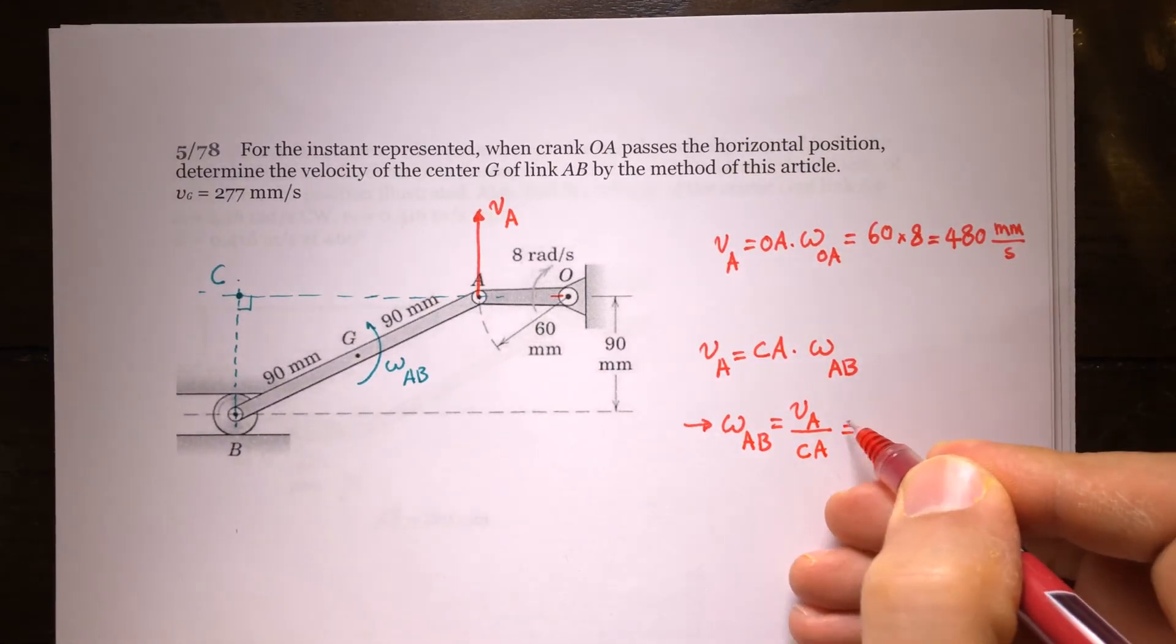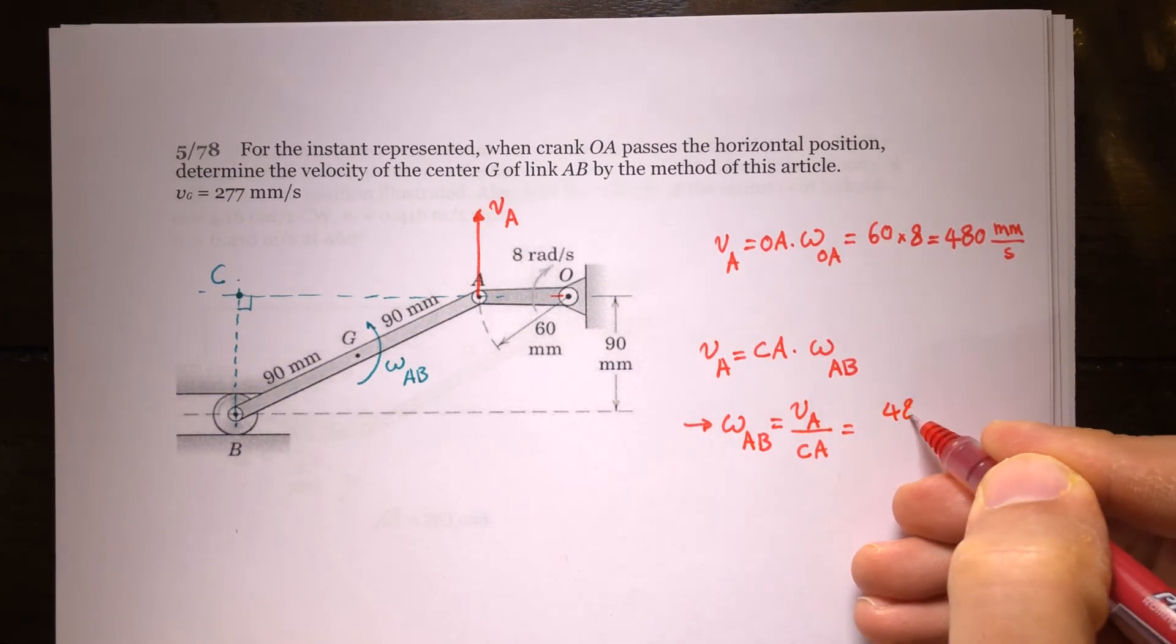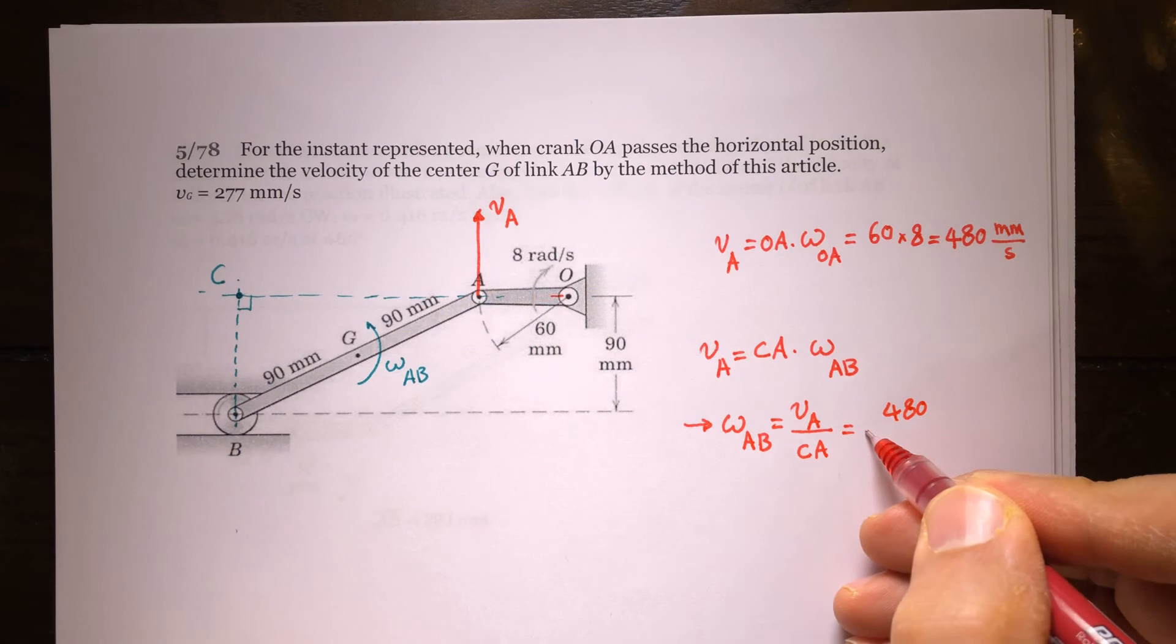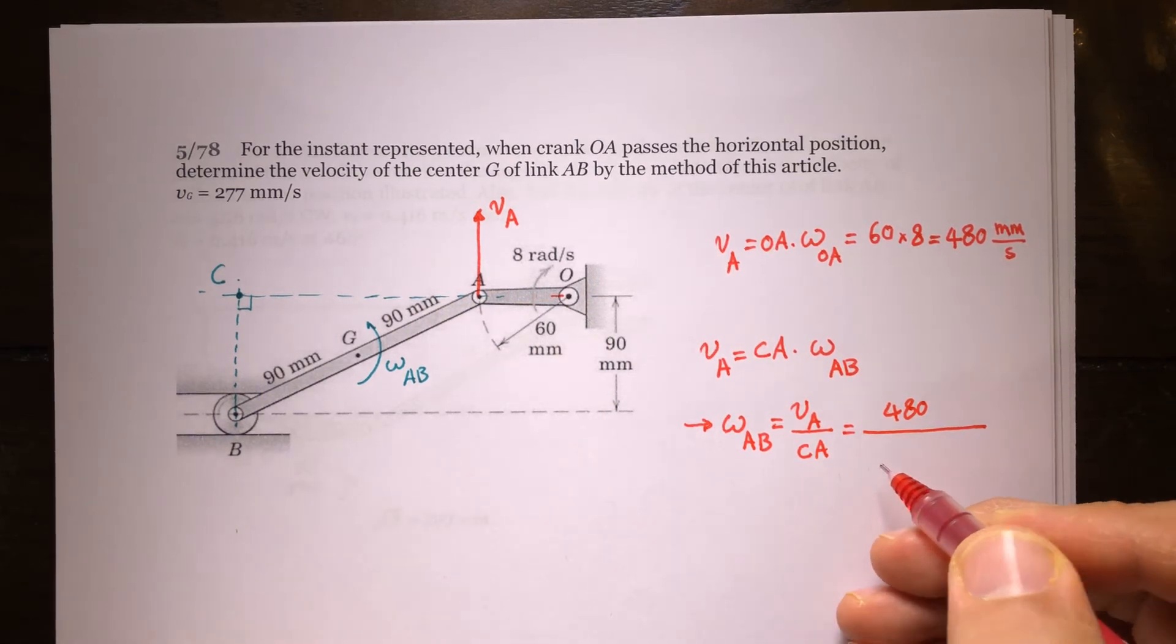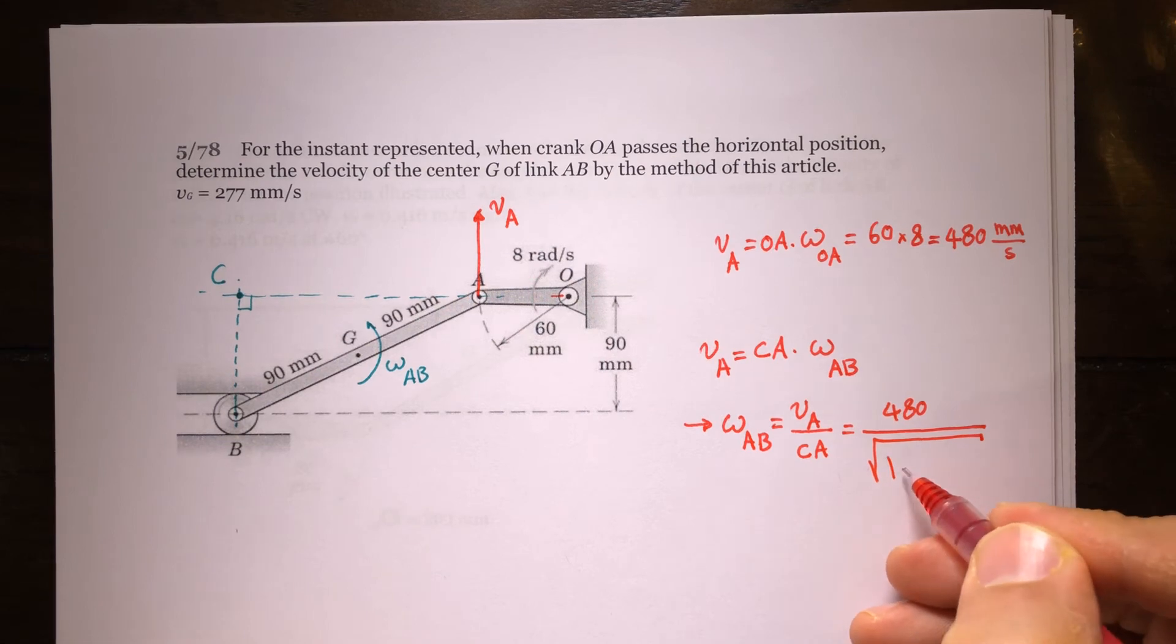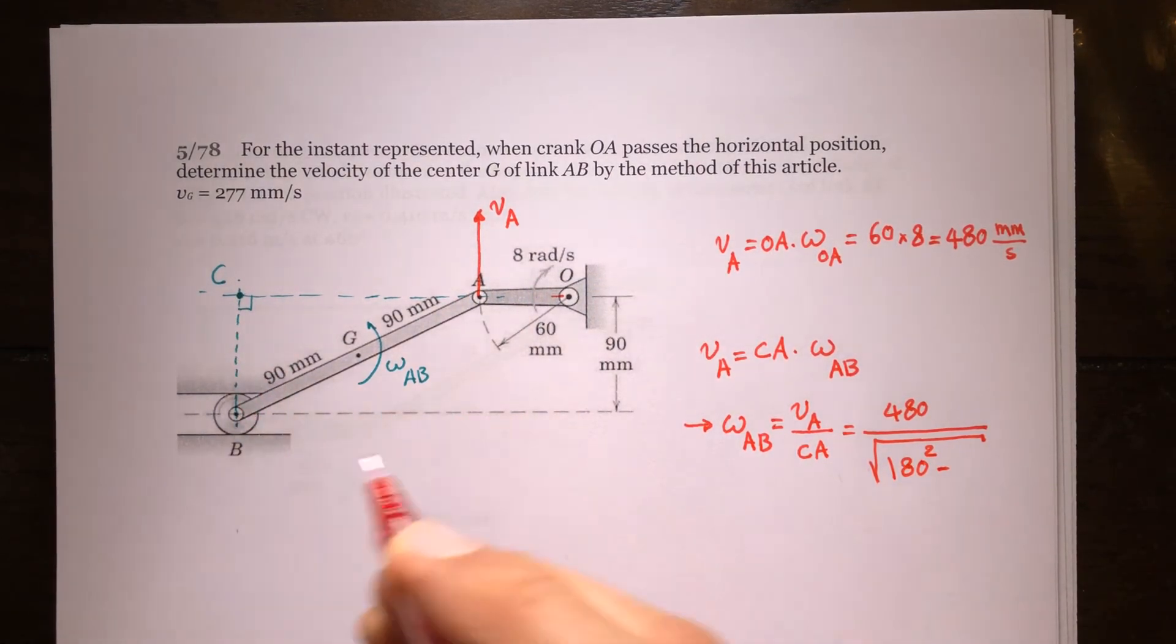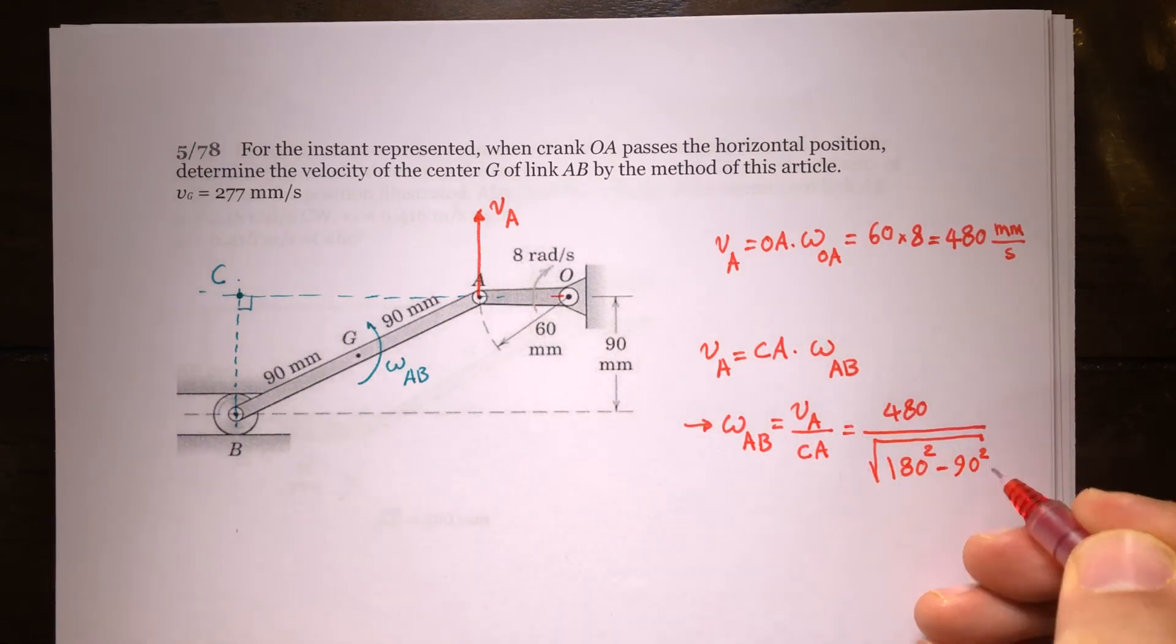So it's going to be equal to 480 millimeters per second divided by CA, which is square root of 180 squared minus 90 squared.